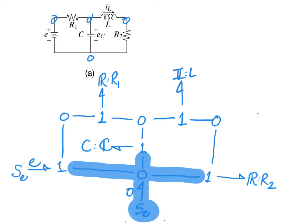If we did so, we would be left with junctions that each have only two bonds. So if we were to simplify, we could connect this effort source all the way to that one junction, this C element directly to that zero junction, and this R element directly to this one junction.